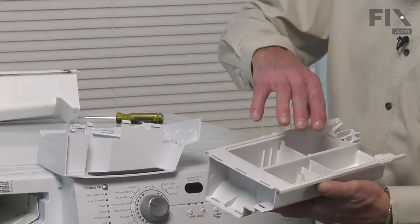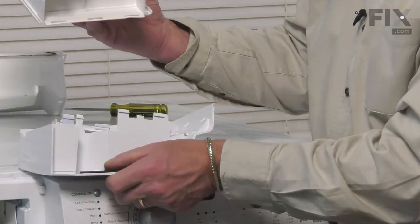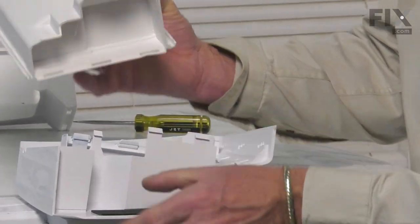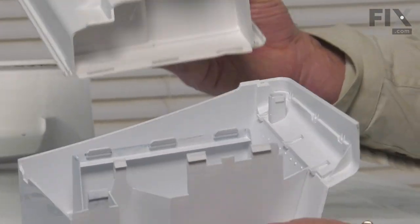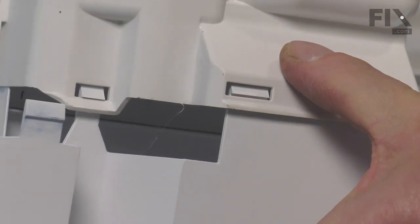Now, to reassemble the new dispenser drawer to the handle, we'll begin by turning it upside down. We'll line up these three slots with the three tabs on the top of the drawer. Fit those through and then pivot it downward until the three latches on the bottom engage.